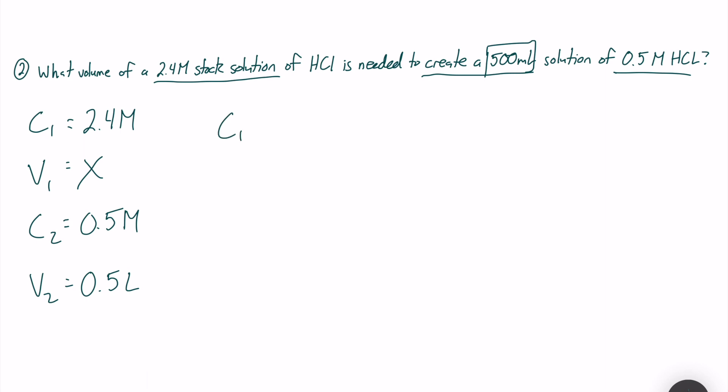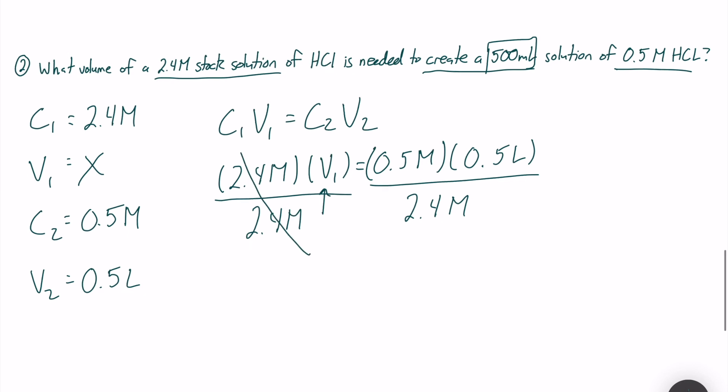Our equation: C1V1 equals C2V2. Let's fill in what we know. We have 2.4 molar multiplied by our V1, which we are finding, and that is equal to 0.5 molar multiplied by 0.5 liters. This time, we are isolating for our initial volume, so we will divide the left side by 2.4 molar to isolate our V1. We can cross out or cancel our C1 from the left side, and V1 will be isolated. We will type into our calculator 0.5 molar multiplied by 0.5 liters, and that is all over 2.4.